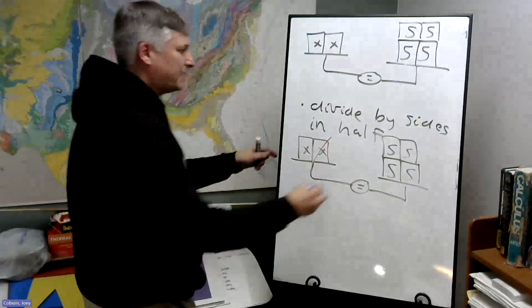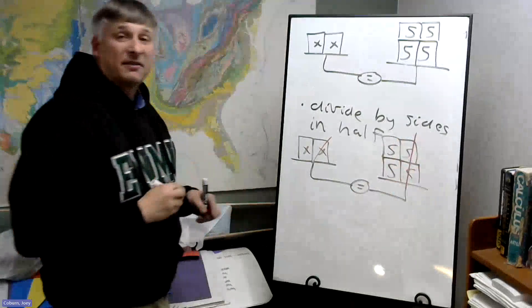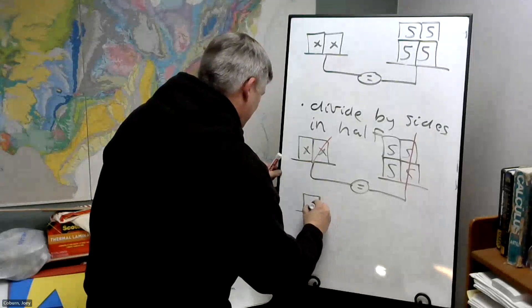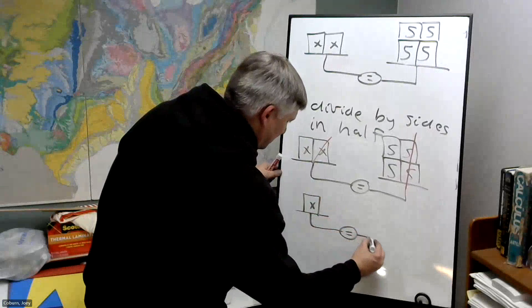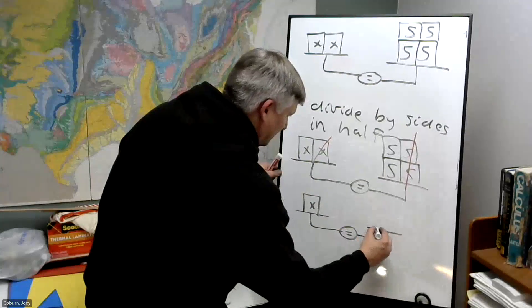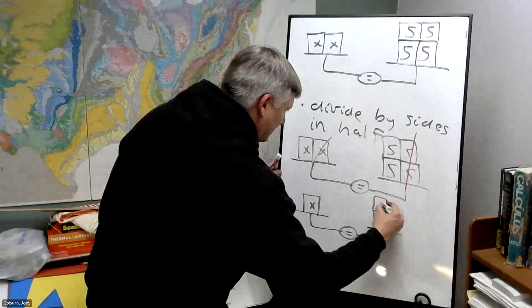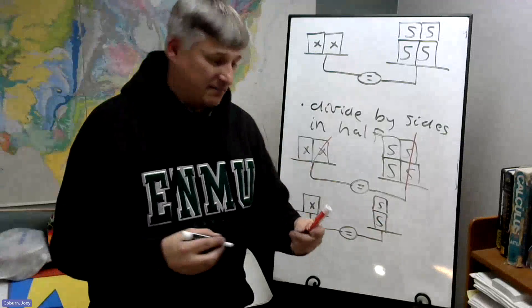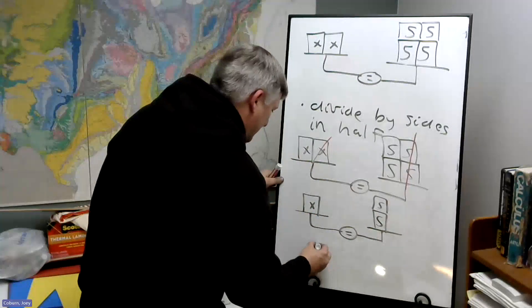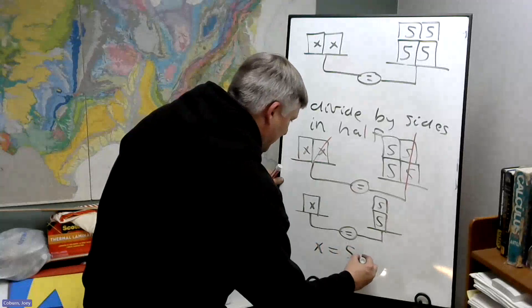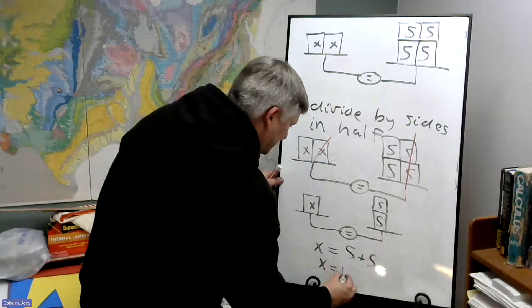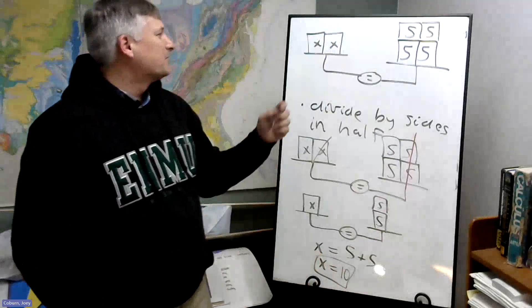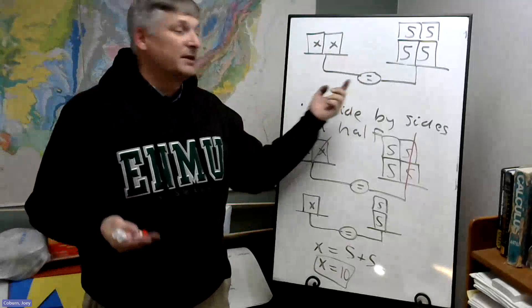We'll take out half the weight on this side and half the weight on that side. And so what we have: X is balanced by five pounds and another five pounds, or X is the same as five plus five. X is ten. So this is twenty pounds. Each of these has to be ten pounds for this to be balanced.